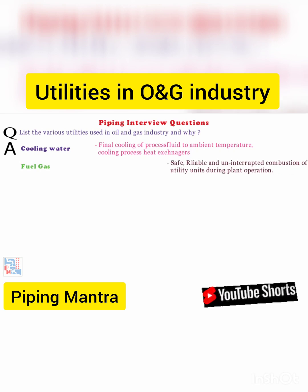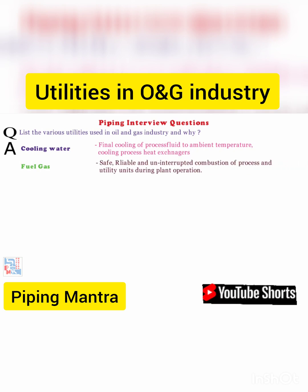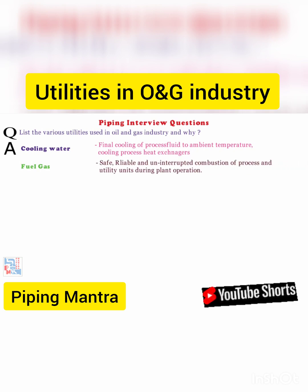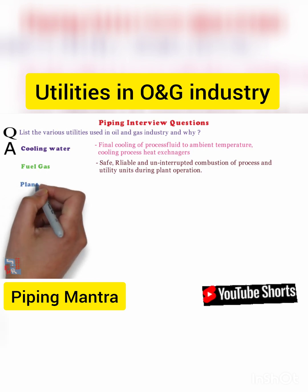2. Fuel Gas Systems: Safe, reliable and uninterrupted combustion of process and utility units used during plant operation.